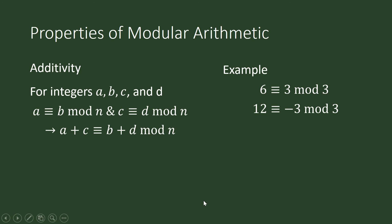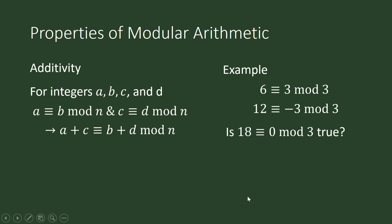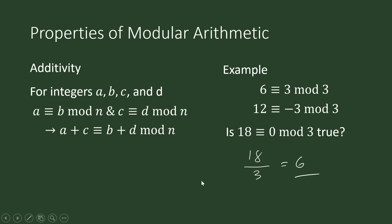Adding the respective terms: 6 plus 12 is 18, and 3 plus negative 3 is 0. Is 18 congruent to 0 mod 3? We check: 18 minus 0 is 18, and 18 divided by 3 is 6, which is an integer. The division is exact, so this is true — 18 is congruent to 0 mod 3.